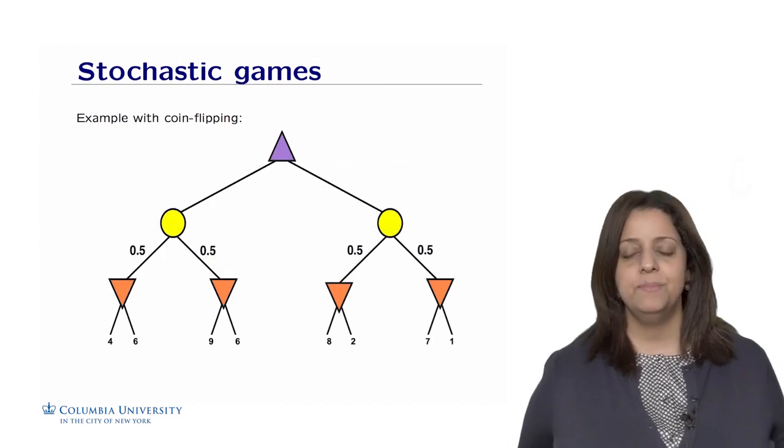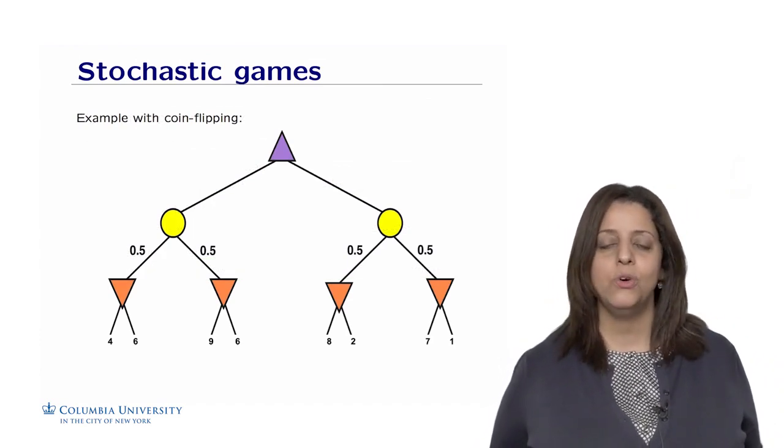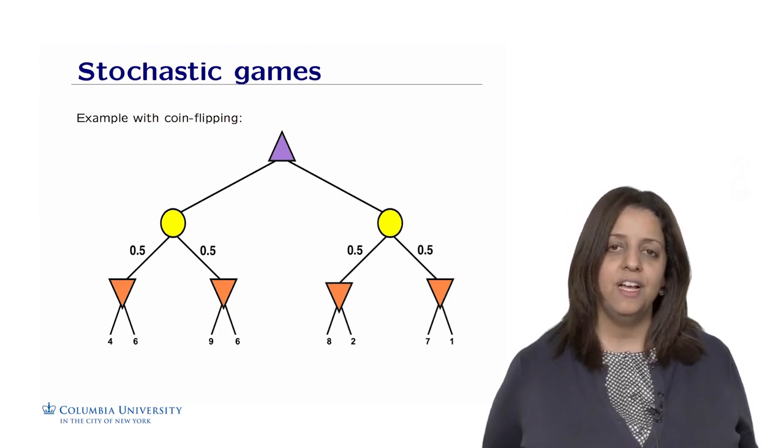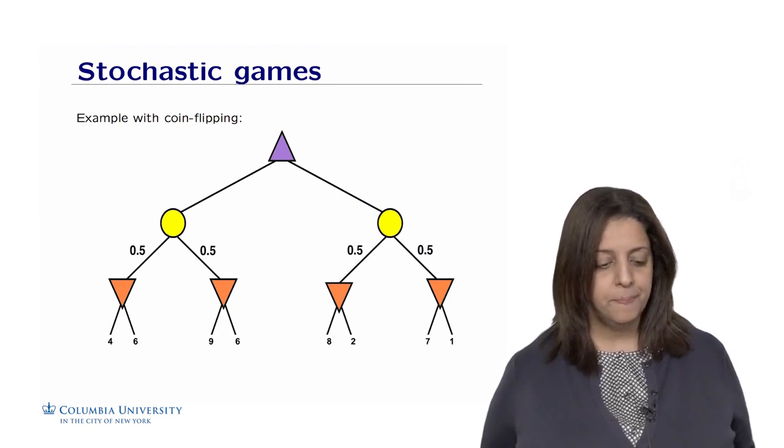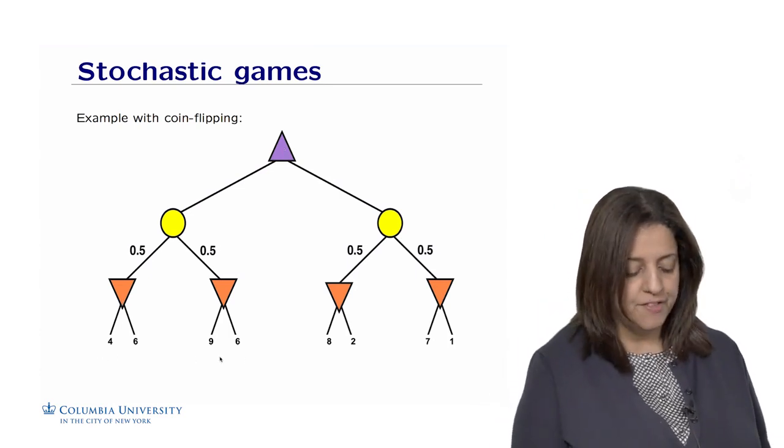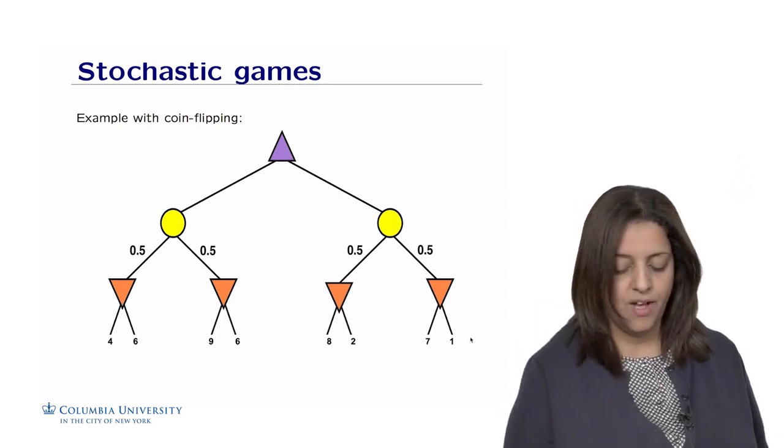Let's take a very simple example with coin flipping. Suppose we have an unbiased coin. We flip it, get heads with probability 0.5 and tails with probability 0.5. Suppose we have max playing here and min playing here, and we have these terminal state values.